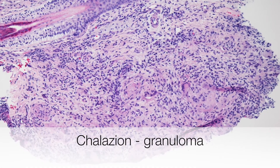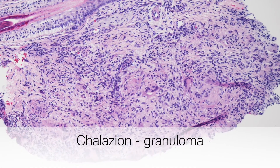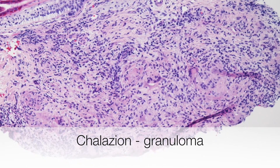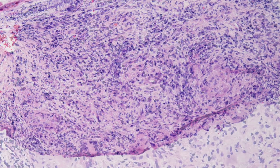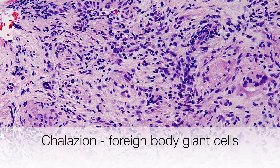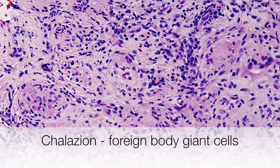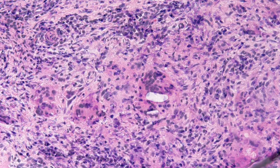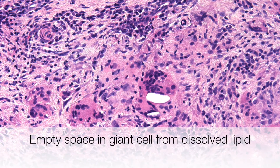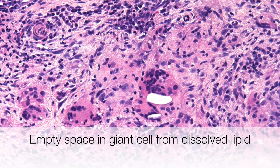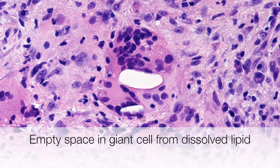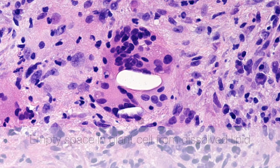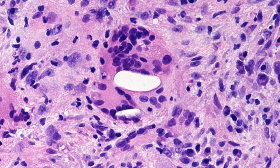This chalazion shows more typical features with a fairly well-formed granuloma; there are foreign body type giant cells, no chronic inflammatory infiltrate. In this area, a foreign body type giant cell contains an empty space, and that is lipid that is dissolved out during processing.